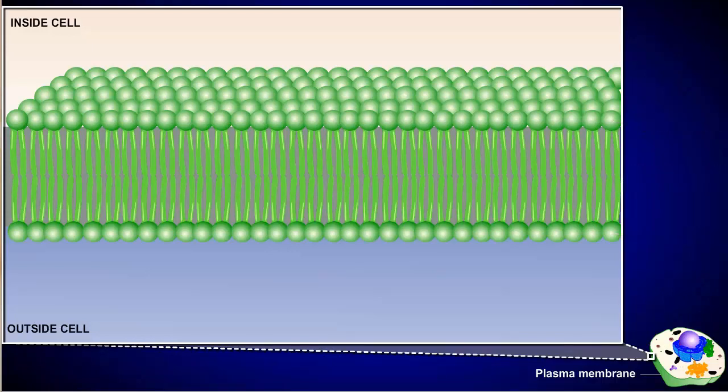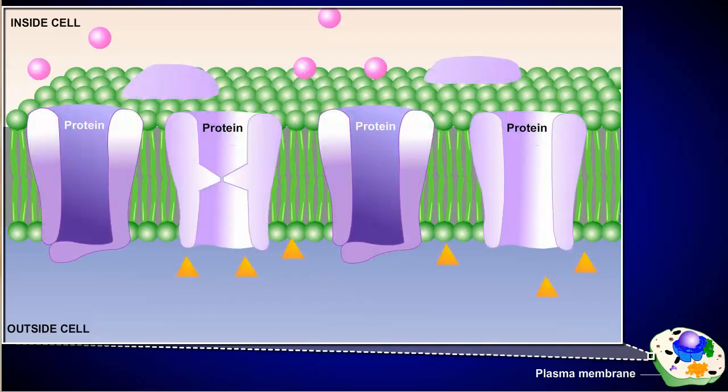The plasma membrane of a cell also contains other molecules that aid in its function. There are a number of different proteins embedded in a membrane, and they serve a variety of functions.